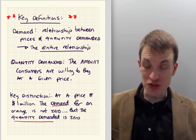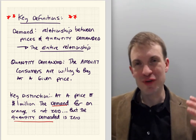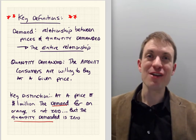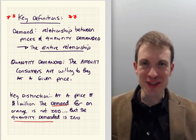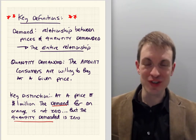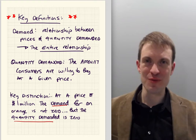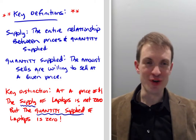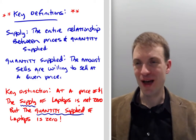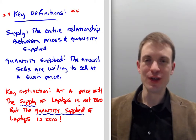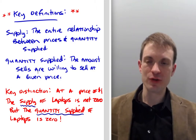A really key distinction: at a price of a million dollars, the demand for oranges is not zero, but the quantity demanded probably is. You're probably not going to buy oranges for a million dollars — if you had them, you'd be excited to sell them at that price, but you wouldn't buy them. So the quantity demanded would be zero. The point is the important terminology: demand versus quantity demanded.